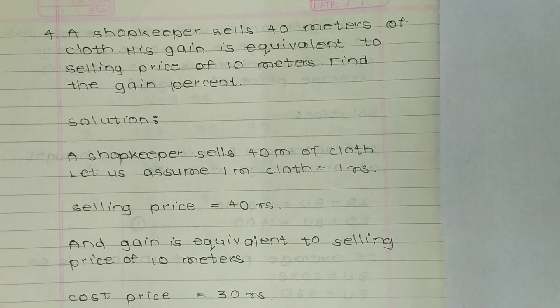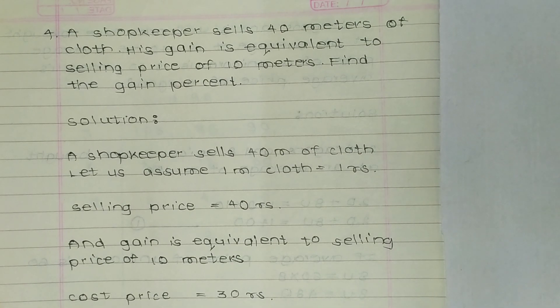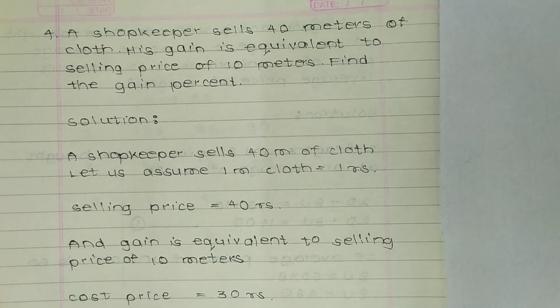Selling price of 10 meters. Solution: A shopkeeper sells 40 meters of cloth. Let us assume 1 meter cloth is equal to 1 rupee. So we have to assume that 1 meter cloth cost 1 rupee. Now selling price is 40 rupees, and gain is equal to equivalent to selling price of 10 meters.